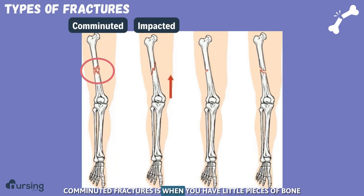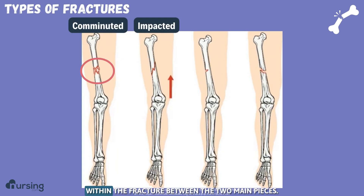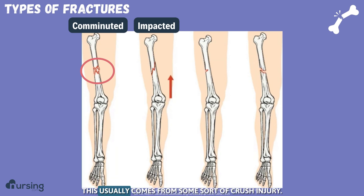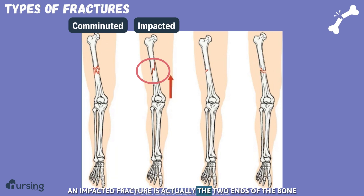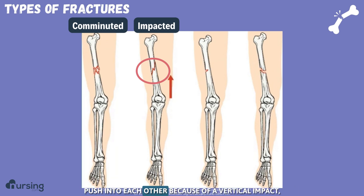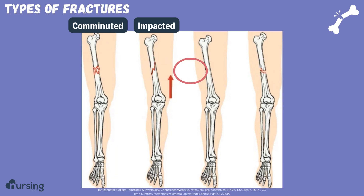A comminuted fracture is when you have little pieces of bone within the fracture between the two main pieces — this usually comes from some sort of crush injury. An impacted fracture is where the two ends of the bone push into each other because of a vertical impact, like jumping off of a building.